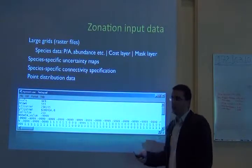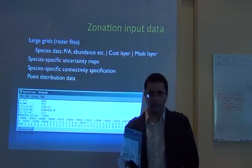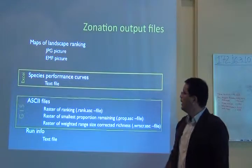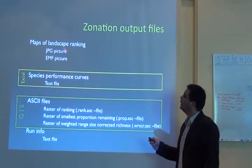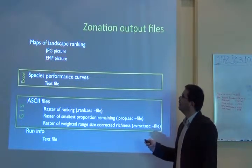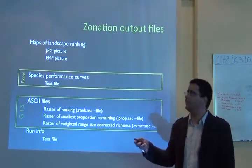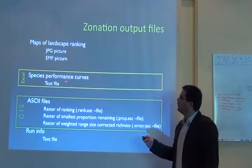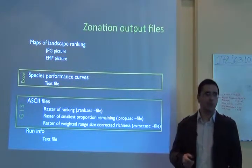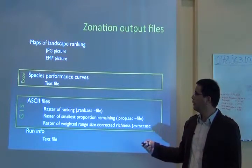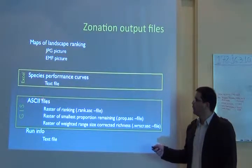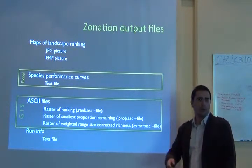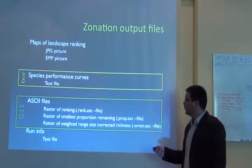All of this goes into a GIS file that must be georeferenced. The output files will always include pictures of the maps you're using, these files, and the species performance curves in a text file that you can use in Excel or any other tool. It will also give you a raster of ranking showing the most important cells in your region.